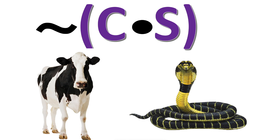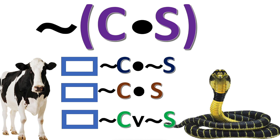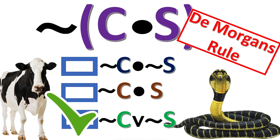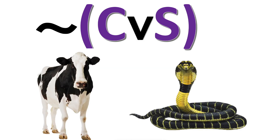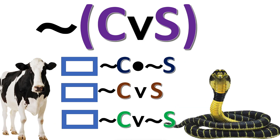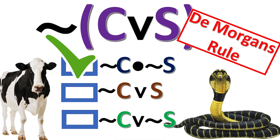Choose a logically equivalent translation. Press pause if you need more time, and the answer will appear in 3, 2, 1. This is the correct application of DeMorgan's Rule. Next practice problem — choose the logically equivalent translation. Press pause if you need more time, the answer will appear in 3, 2, 1. This is the correct application of DeMorgan's Rule.